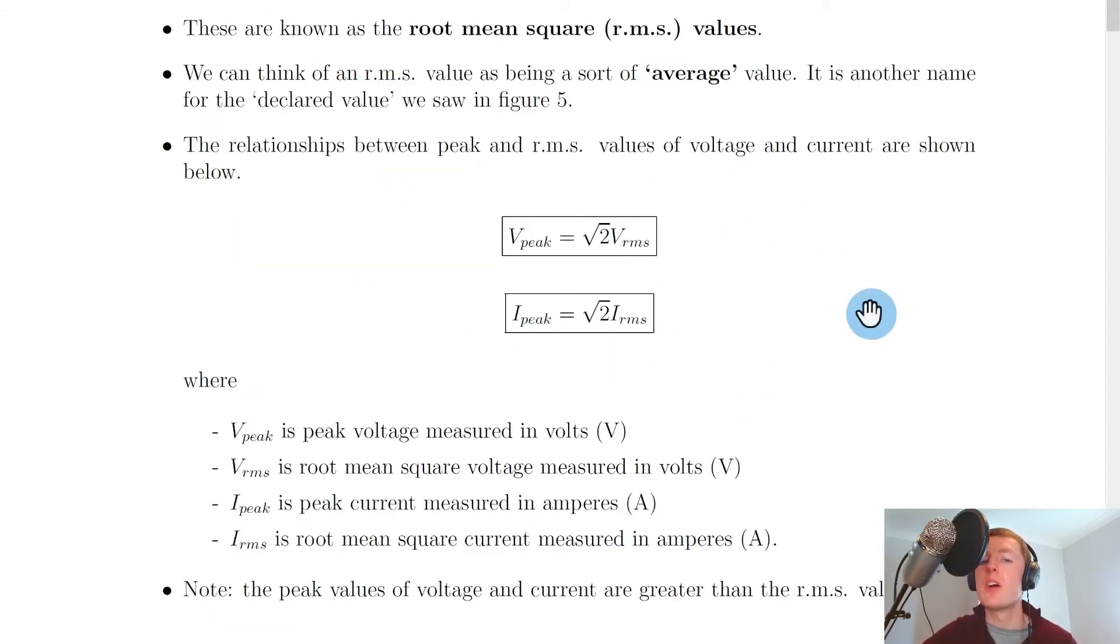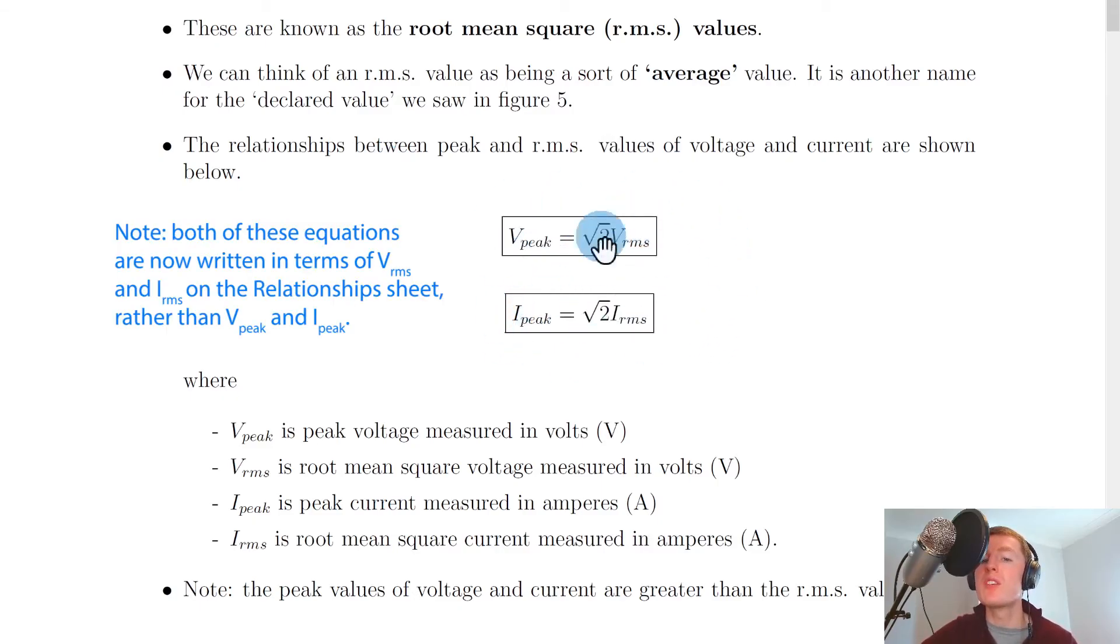And we have two relationships here. One is relating the peak voltage to the RMS voltage, and the other is relating the peak current to the RMS current. And you get both of these relationships on the relationship sheet in the exam.